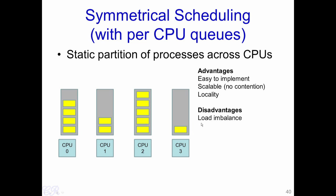The drawback of the scheme is that it could lead to load imbalance. Load imbalance occurs when some CPUs have a lot of processes in the ready state while other CPUs, such as CPU 3, have just very few processes in the ready state. Thus CPU 2 is doing a lot more work compared to CPU 3.